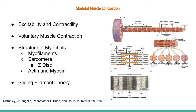Myofibrils are a tube-like structure composed of myofilaments. Within the myofibrils are multiple sarcomeres. The sarcomere is where contraction takes place. The length of each sarcomere is the distance between two Z-discs in the myofibril. Within the boundary of the Z-discs, you can find the actin and myosin that make up the myofilaments.